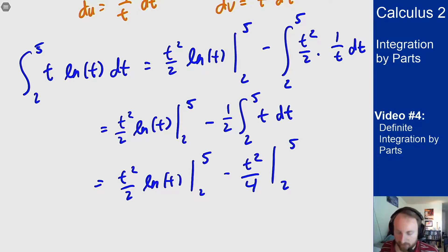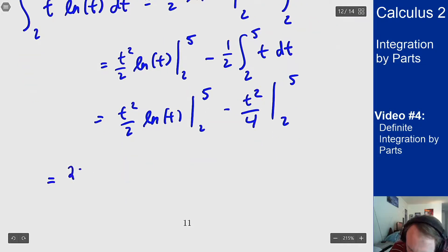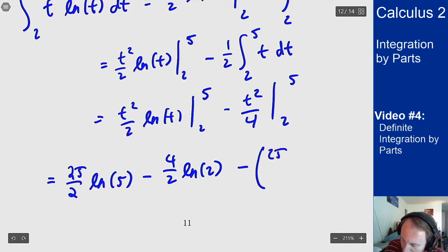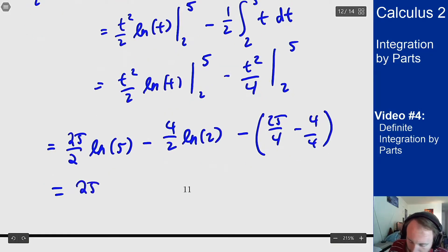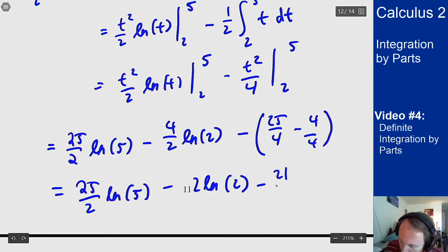And now let's deal with all of our limits. So I get a 25 over 2 log of 5 minus a 4 over 2 log of 2 minus a 25 over 4 minus 4 over 4. 25 over 2 log of 5 minus 2 log of 2 and then minus 21 over 4.